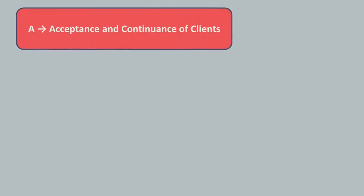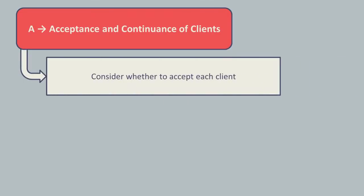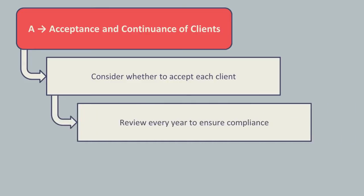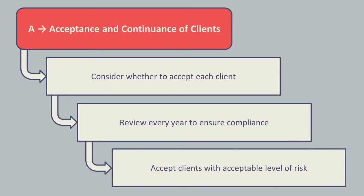The A is for acceptance and continuance of clients. The audit firm must consider whether they should accept every engagement. Once they have accepted the client engagement, they must then review every year to ensure the entity should continue to be their client. The key issue is that the audit firm must only accept clients with an acceptable level of risk.